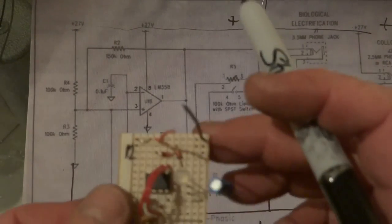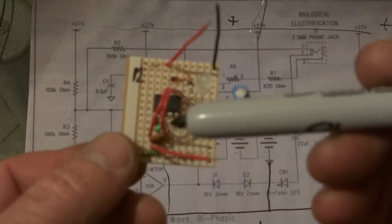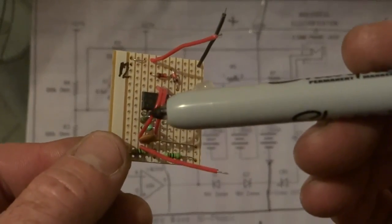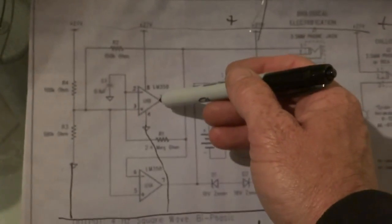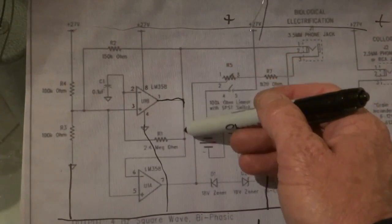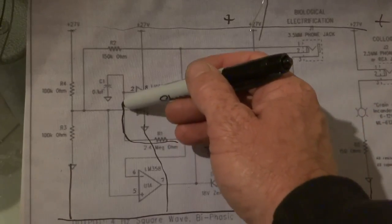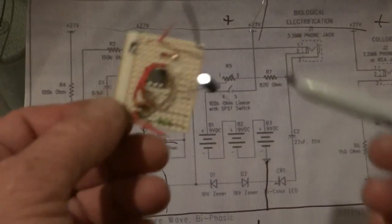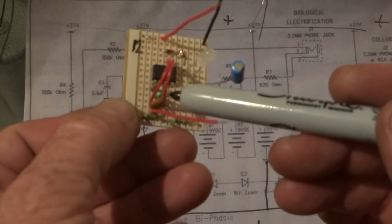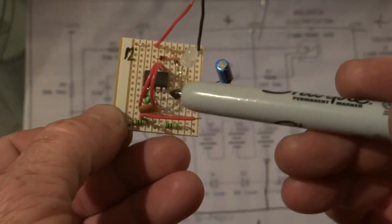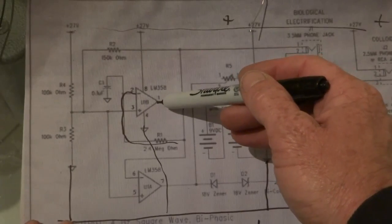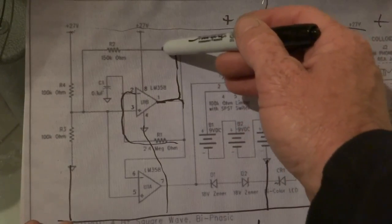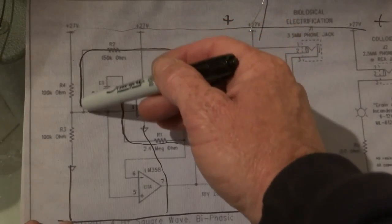And where we started, we started with the 2.2 or 2.4 from number 1 to number 2, which is this basically here, the 2.4 that goes to number 2. Then we went the 150k ohm from number 1 to number 3, which is from number 1 goes up the top, 150k to number 3.